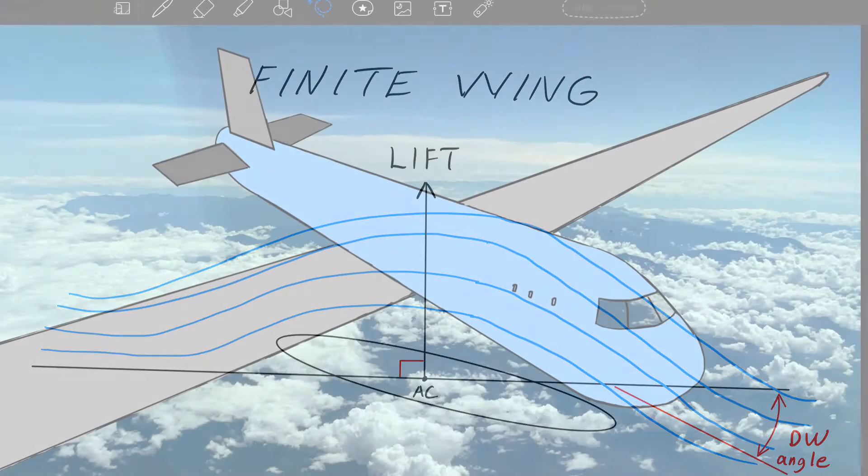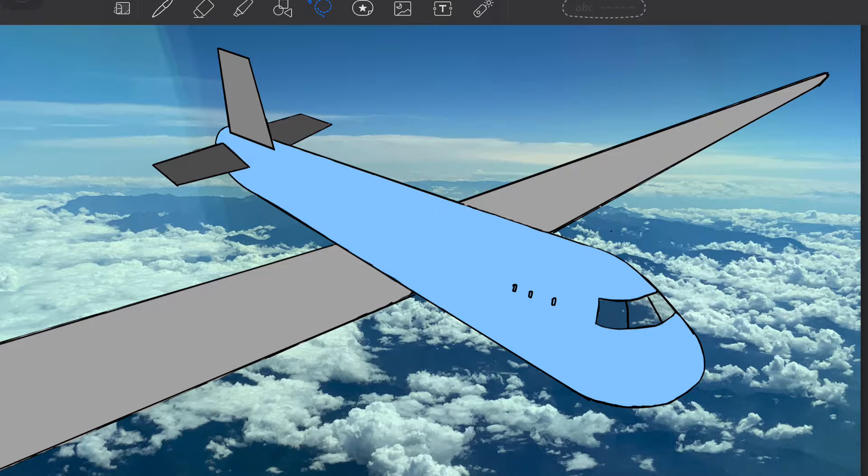An infinite wing is a theoretical wing that does not have a wingtip because it's so long, and therefore it does not have a wingtip vortex.